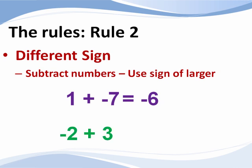How about negative 2 plus 3? The signs are different, a negative and a positive. Subtract the numbers, 3 minus 2, and use the sign of the larger number, which is positive 3. The answer is a positive 1.